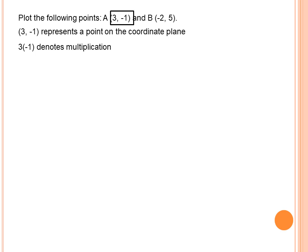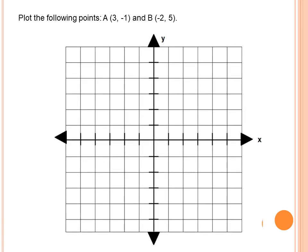Point B is (negative 2, 5). Let us try to plot point A, which is (3, negative 1) in the form (x, y). The x-coordinate is 3 and the y-coordinate is negative 1. To start, we go to the origin first. Since the x-coordinate is 3, we look at the x-axis — the horizontal number line — and find positive 3, which is 3 units to the right of 0.